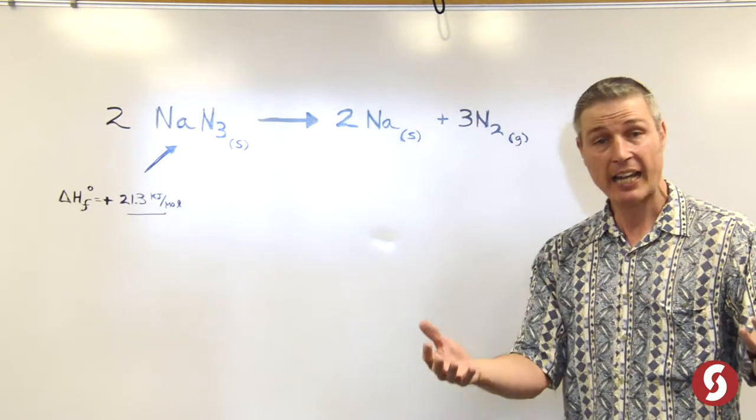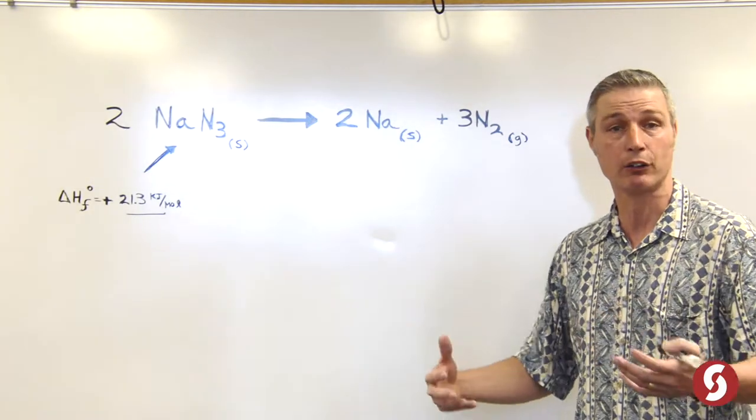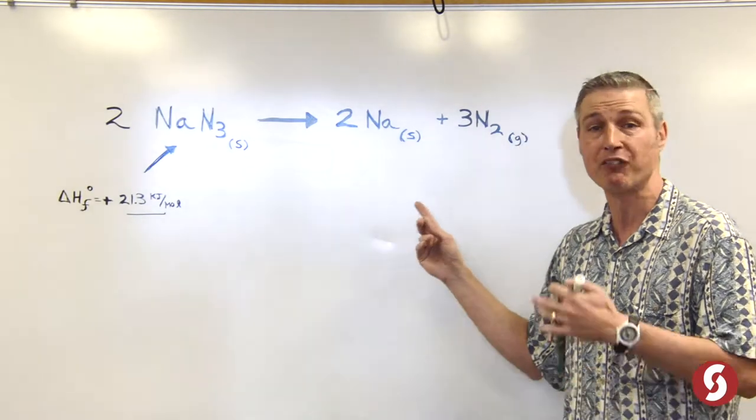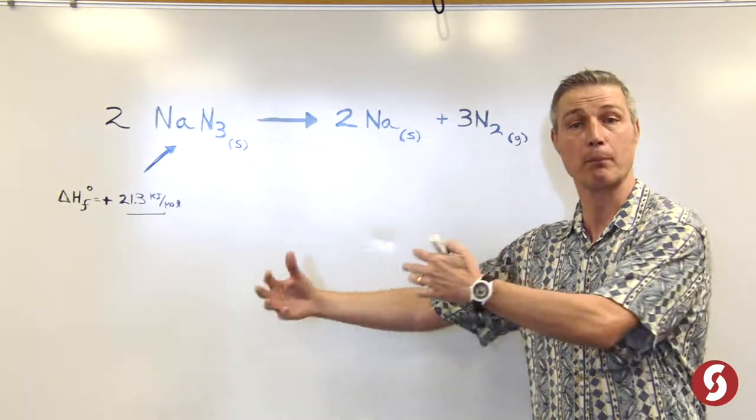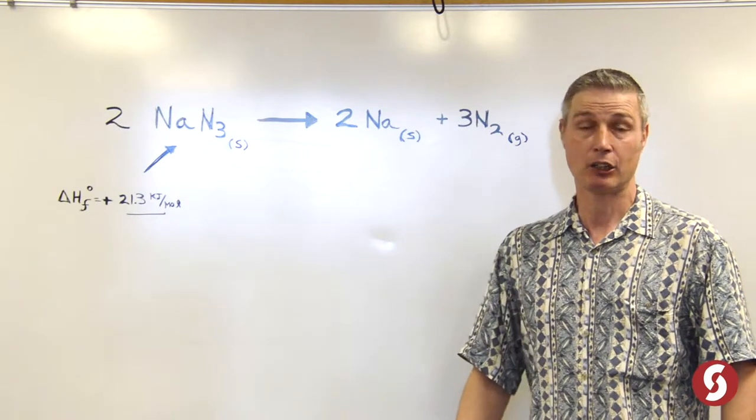Now here's the thing. Gases take up about a thousand times more space than a solid or a liquid. So an ounce of this stuff will fill up about 15 liters, which is about two basketballs. And that's where the pressure that inflates the nitrogen bag comes from.